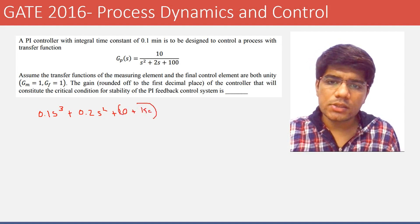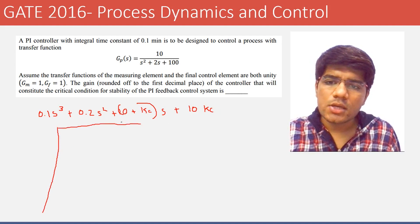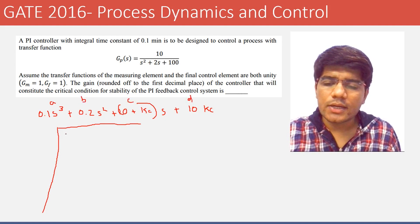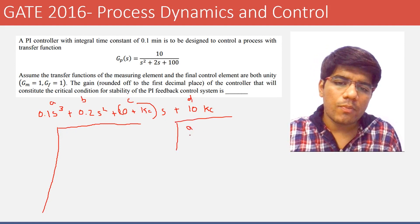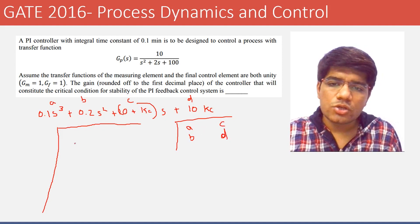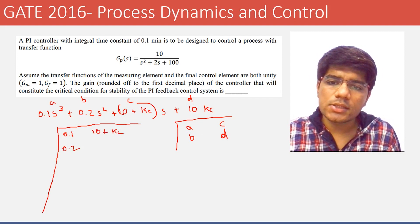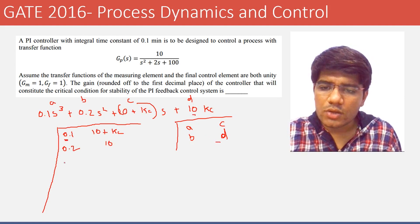We now apply Routh stability analysis to the characteristic equation 0.1s³ + 0.2s² + 10s + 10Kc. In Routh array form, the coefficients are: a = 0.1, b = 0.2, c = (10 + Kc), and d = 10Kc. Wait — from the expansion, the coefficient of s is 10 and the constant term is 10Kc.